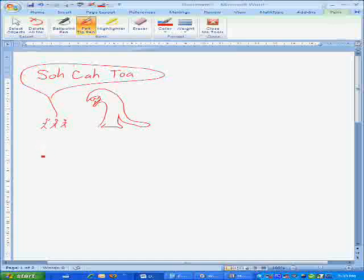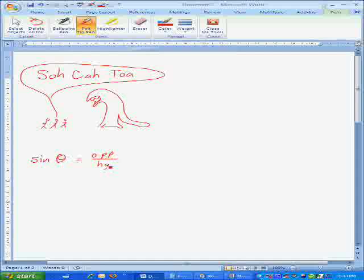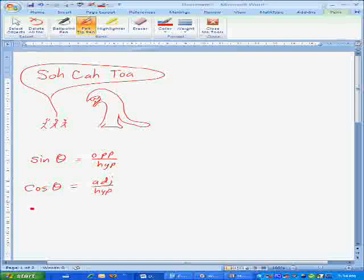Now what those mean, the SO means that the sine of an angle is equal to the opposite side of the triangle over the hypotenuse of the triangle. CA stands for cosine is equal to the adjacent over the hypotenuse. And tangent means that is equal to the opposite over the adjacent.